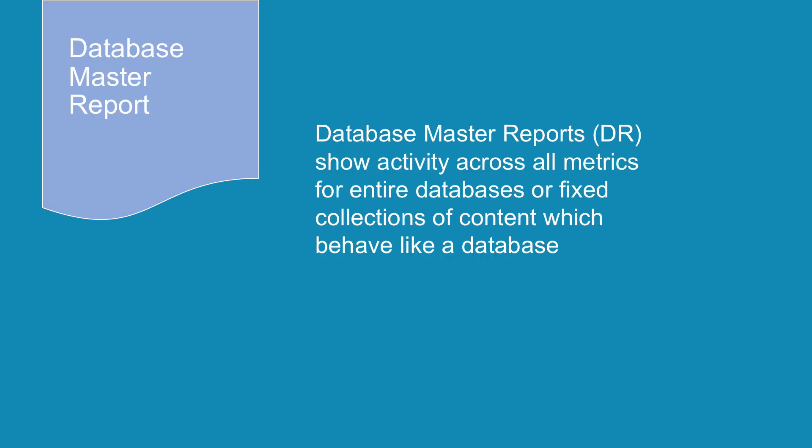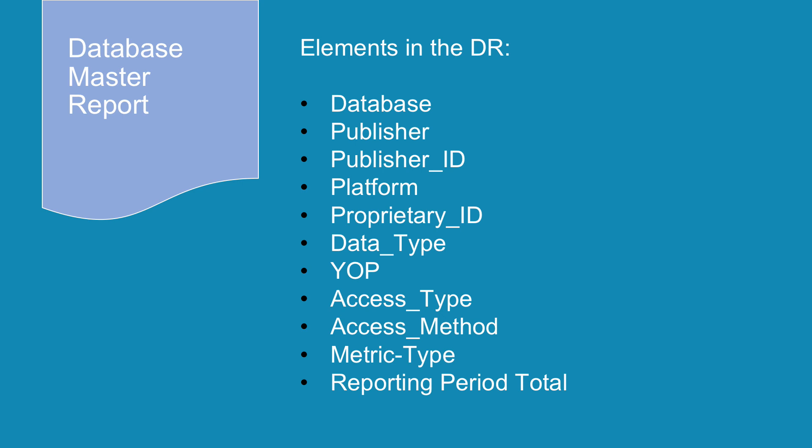Database Master Reports are known by the acronym DR. They show activity across all metrics for entire databases or fixed collections of content which behave like a database. DRs are less compact than PRs, with 11 columns across plus the monthly breakdowns. In addition to the columns in the platform master report, a DR will show the database name within the platform, the publisher details, and the year of publication. The elements in the database master report are: database, publisher, publisher ID, platform, proprietary ID, data type, year of publication, access type, access method, metric type, and reporting period total.